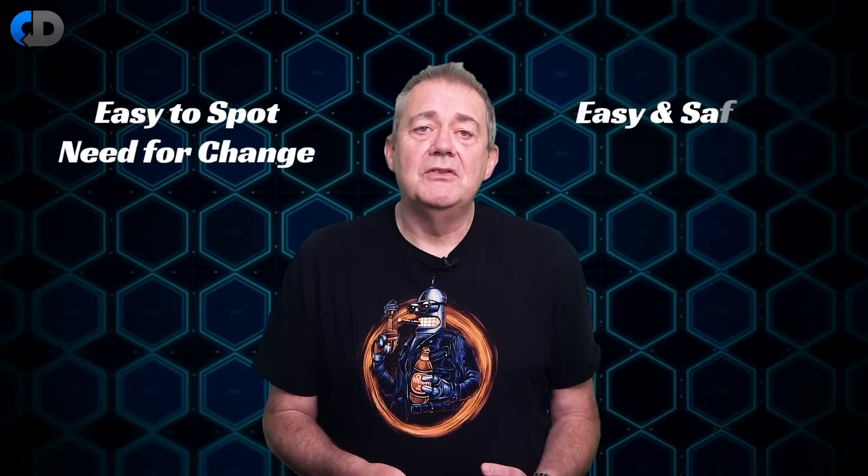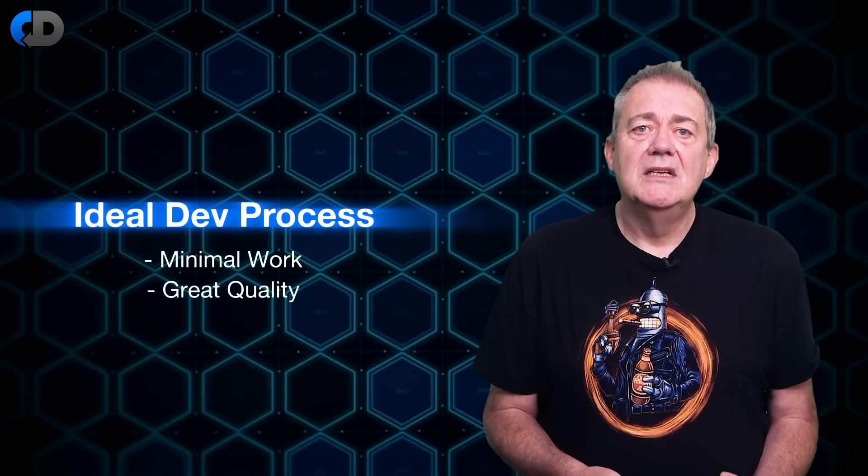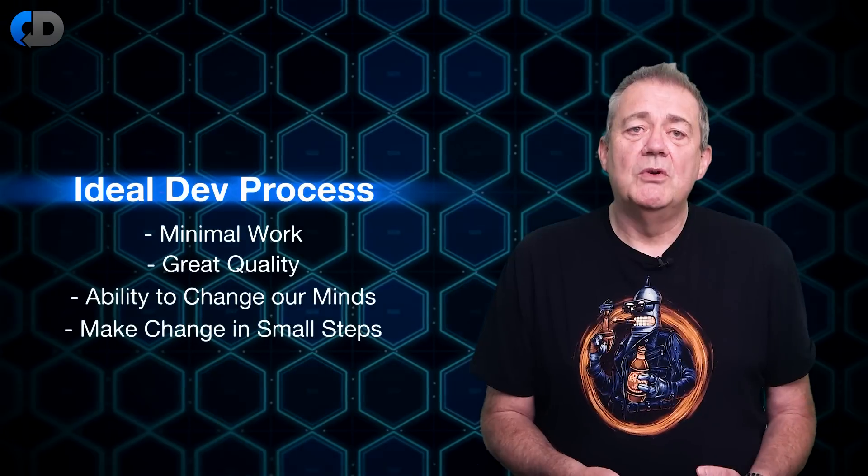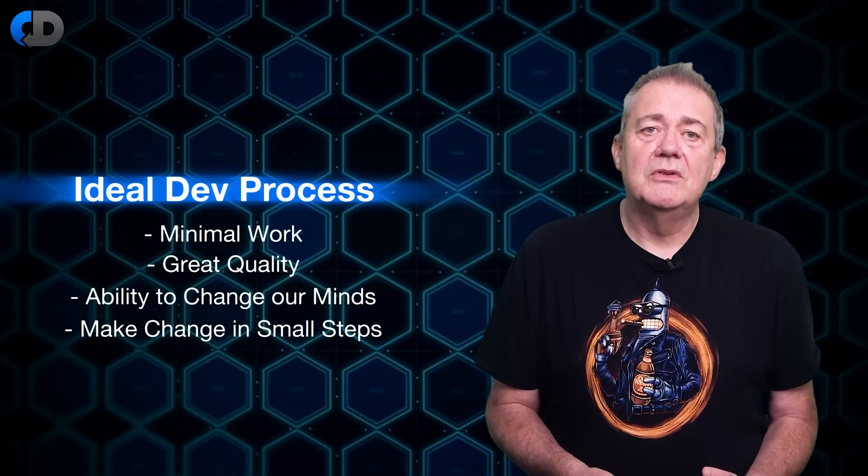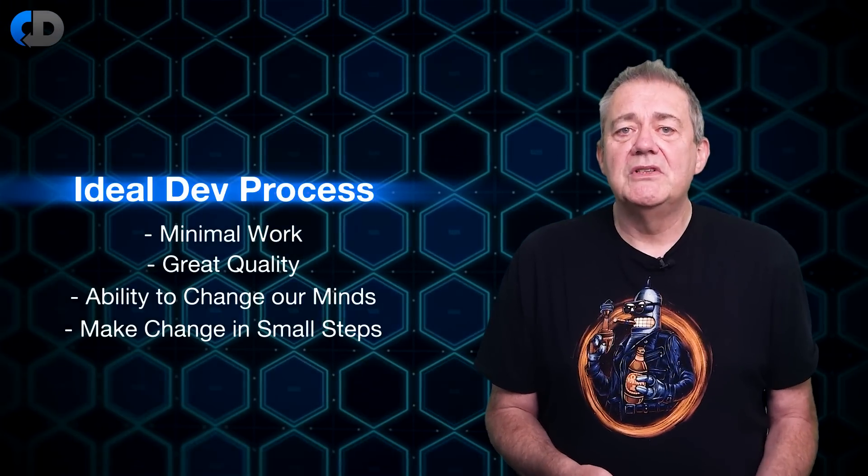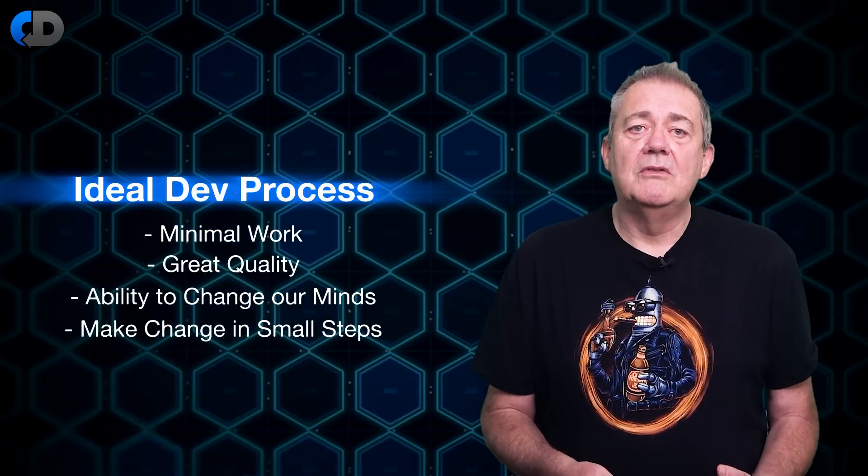So for that we need two things in our approach to working. We need to organize to be able to spot the points where we need to change something and in our ideal approach to development we need to work in ways that maintain our freedom to make those changes easily, safely and with confidence once we recognize the need. Crucial to our ability to do both of these things is that we need to make progress in a series of small steps. I've been lucky to have worked with some genuinely great software developers during the course of my career and the closest that I can come to understanding what makes them great is that they all make progress in very small steps and check their progress all of the time.